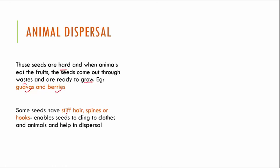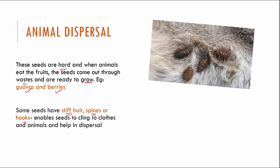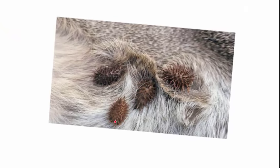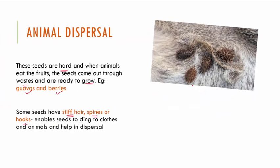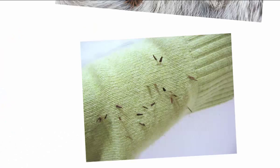On the other hand, some seeds have stiff hair, spines or hook-like structures which help them cling to our clothes or to animal fur, and by this they get carried to different places. A seed with spines can cling to the fur of an animal and be transported wherever the animal moves. Similarly, a seed with hook-like structures clings to clothes and moves wherever the person goes. This is another method of dispersal through animals.